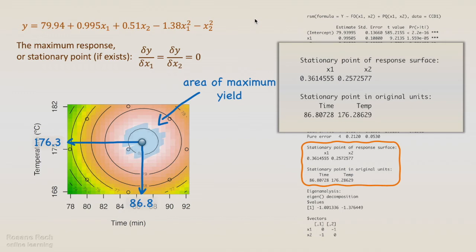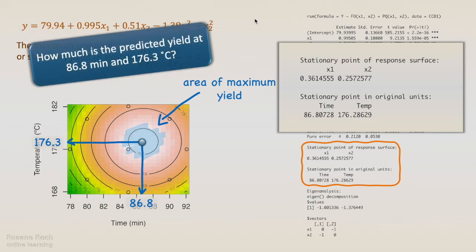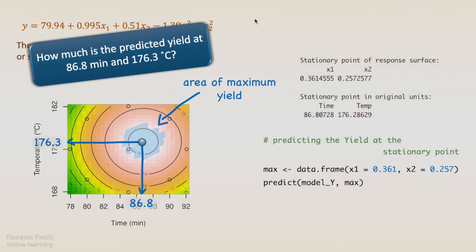And the last question is, how much is the predicted yield at 86.8 minutes and 176.3 degrees Celsius?